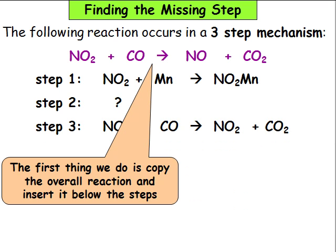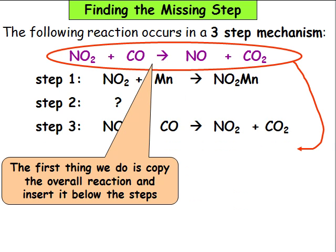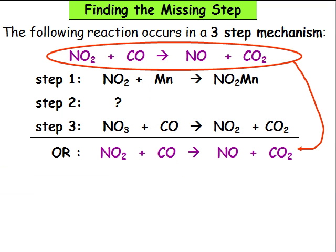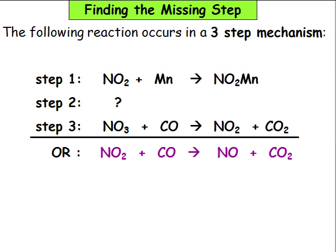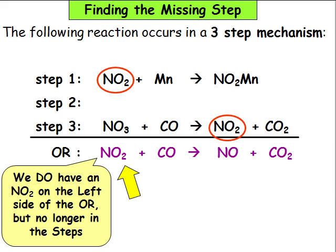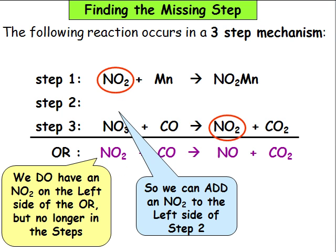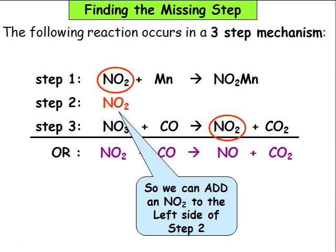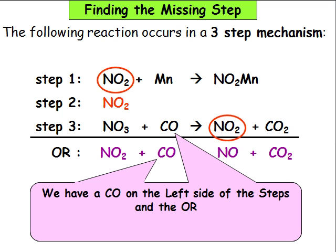The first thing we do is copy the overall reaction and insert it below the steps. Steps 1, 2, and 3 must add up to the overall reaction. We can start by looking for species which cancel. We circle the NO2s in the steps because they will cancel. We do have an NO2 on the left side of the overall reaction, but the ones in the steps were cancelled, so we add an NO2 to the left side of step 2. We have a CO on the left side of the steps and in the overall reaction, so the CO is fine.